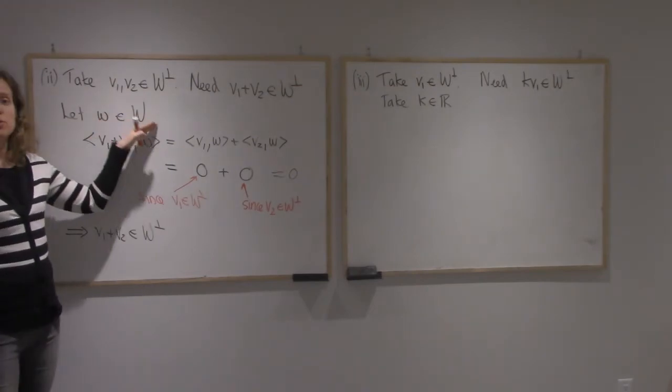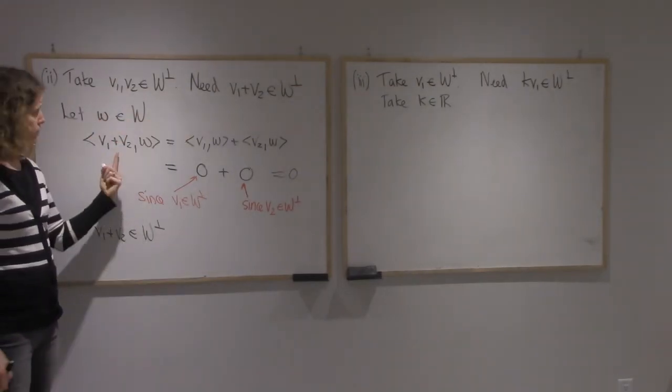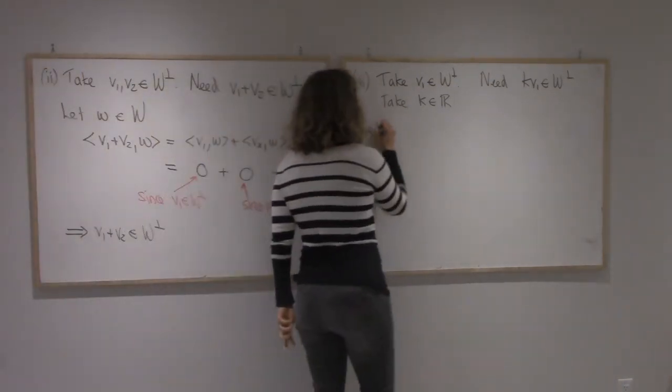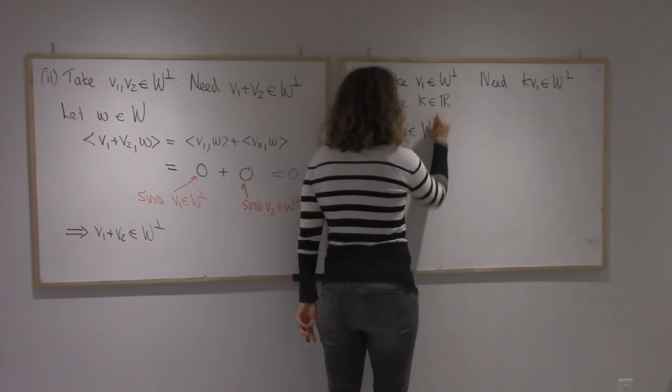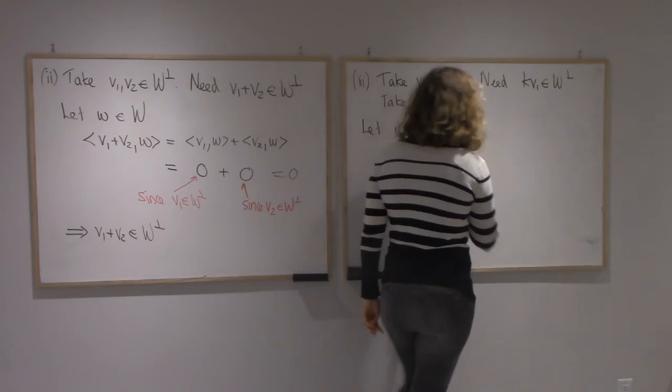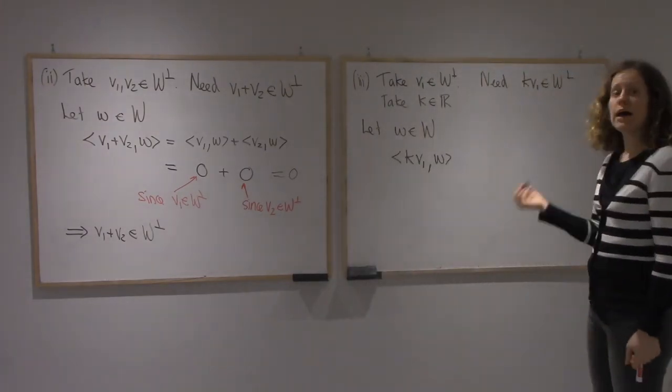So again I need to check the condition on kv1. So it's going to start the same way. I'm going to take any w in W and I'm going to check whether my element that I want in W-perp, whether it's perpendicular to w. So let w be in W. Then I'm going to look at kv1 dot w.